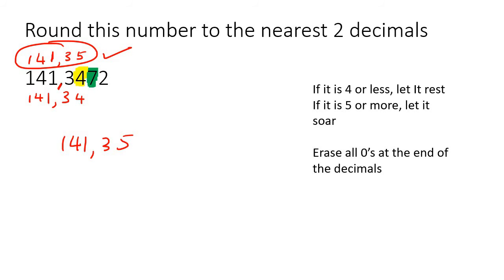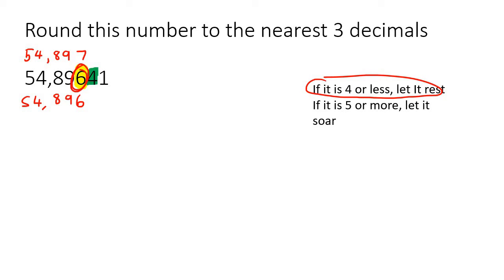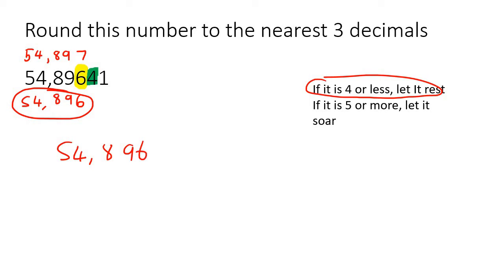Only when the zeros are at the end. In a few examples in this lesson I'll show some where there are zeros that are not at the end. Now to see what's going to happen, you look at the number on the right. It tells us that if that number is 4 or less, let it rest — meaning leave it alone. So leave it as a 6. The final answer for this one is 54,896.